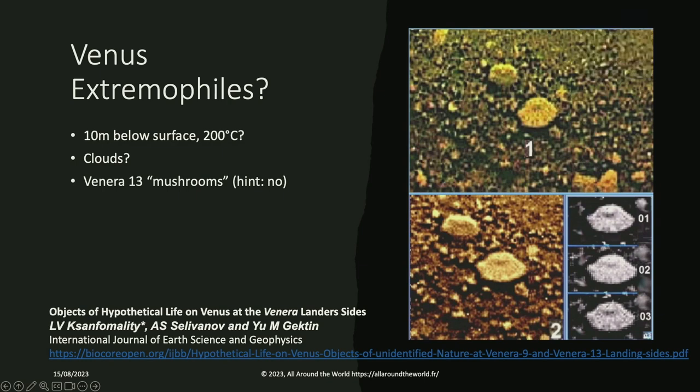And could extremophiles have evolved on Venus to survive the harsh conditions? It turns out, 10 meters below the surface of Venus, it might only be 200 degrees Celsius. Extremophiles could potentially exist there. In the clouds, the clouds are actually fairly comfortable. Just above the clouds on Venus is the most Earth-like place in the solar system outside of Earth. And the Venera 13 mushrooms, those are photos of them from a paper. This is some Russian scientists revisiting the data from the Soviet era scientists. This is wild. They talk about mushrooms, scorpions, all sorts of weird things. We took a picture of this, and then we took a picture later, and that thing was gone. Did it move? It's really weird stuff. But no, I don't think it was life.